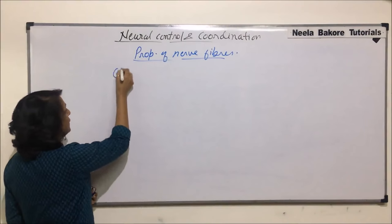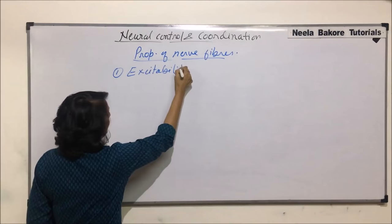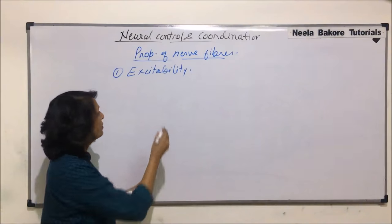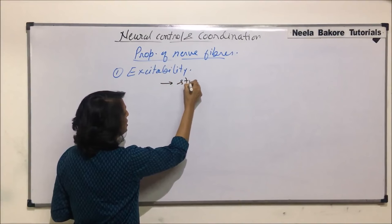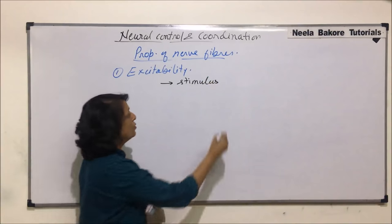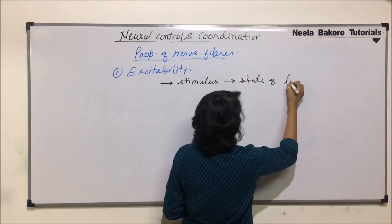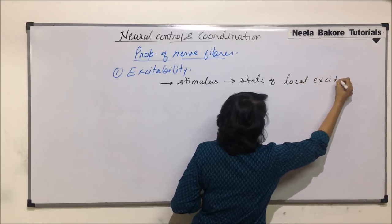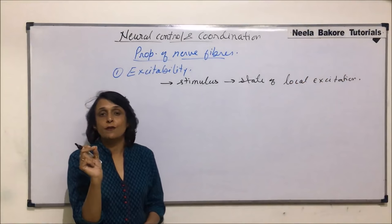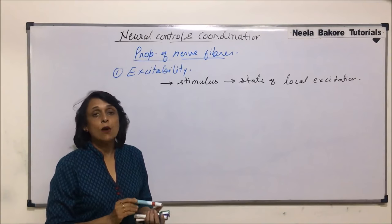The first property is known as excitability. When a nerve receives a stimulus, it gets into a state of local excitation. This excitation is only restricted to one point, and that is why it is known as local excitation.